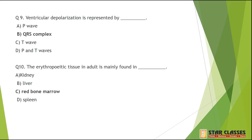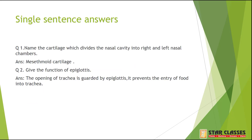Question 9: Ventricular depolarization is represented by QRS complex. Question 10: The erythropoietic tissue in adults is mainly found in red bone marrow. We are now done with MCQs.